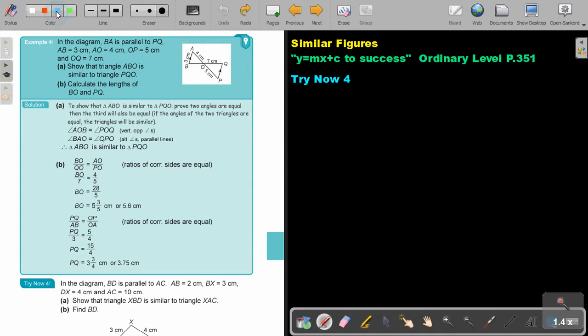Angle AOB is equal to angle POQ because they are vertical opposite angles. Then angle BAO is equal to QPO. Do you see your Z? That's alternate angles. The lines are parallel, so alternate angles, parallel lines. Therefore, this triangle will be equal.